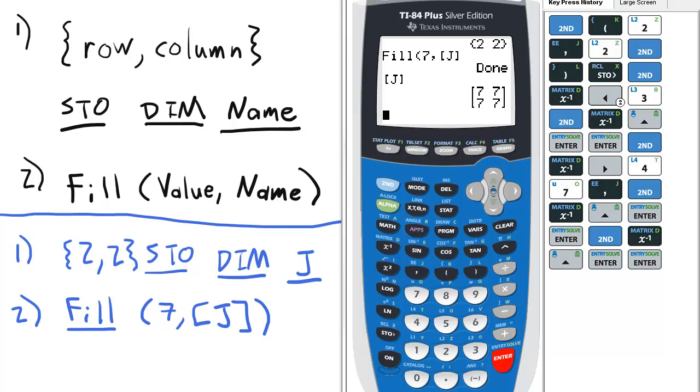There's another way to do this. If you already have a matrix with the dimensions you want, you could have chosen fill the value you wanted and the matrix to fill. Another way to do this is to make an identity matrix first with the dimensions you want, and then choose the fill option.